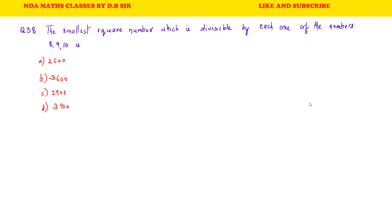The smallest square number which is divisible by each one of the numbers 8, 9, and 10 is — so first we look at the options. 2600: 26 is not a perfect square, so this option is out. Option B has a square number. 2900: 29 is not a perfect square, so this is not square. Option D: 3900 — 39 is not a perfect square. So this is not square.